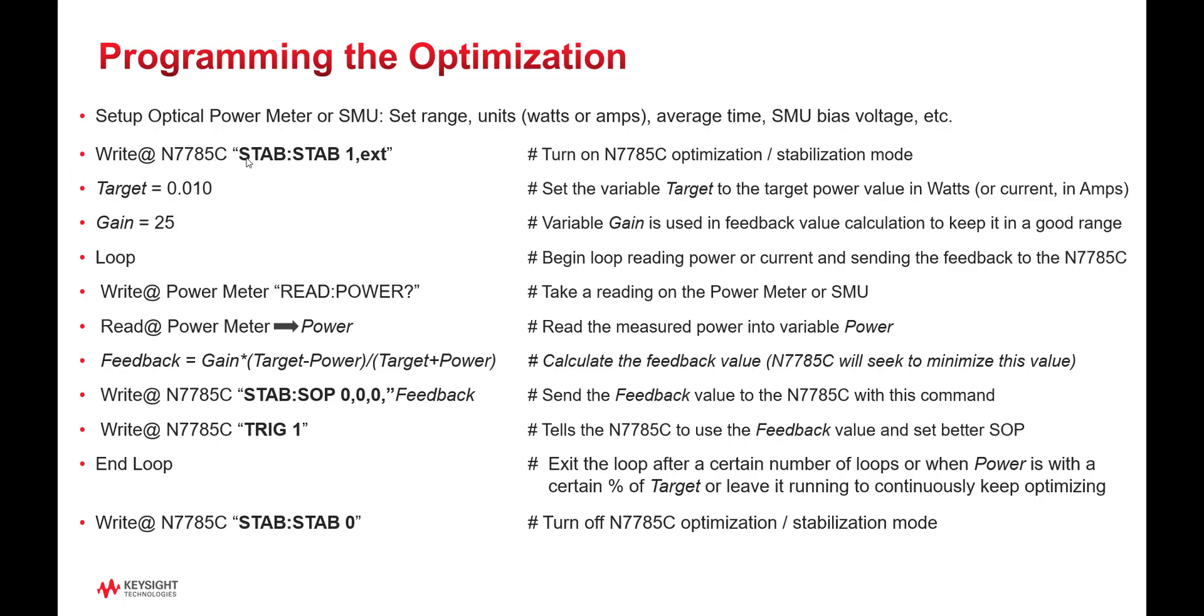Once that's set up, we send this command to the N7785C to turn on the stabilization and optimization mode. The next defined two variables. One is our target, either our target power that we're trying to get to, or target current, in the case of a current measurement. For example, 0.01 watts optical power, or 10 milliwatts.